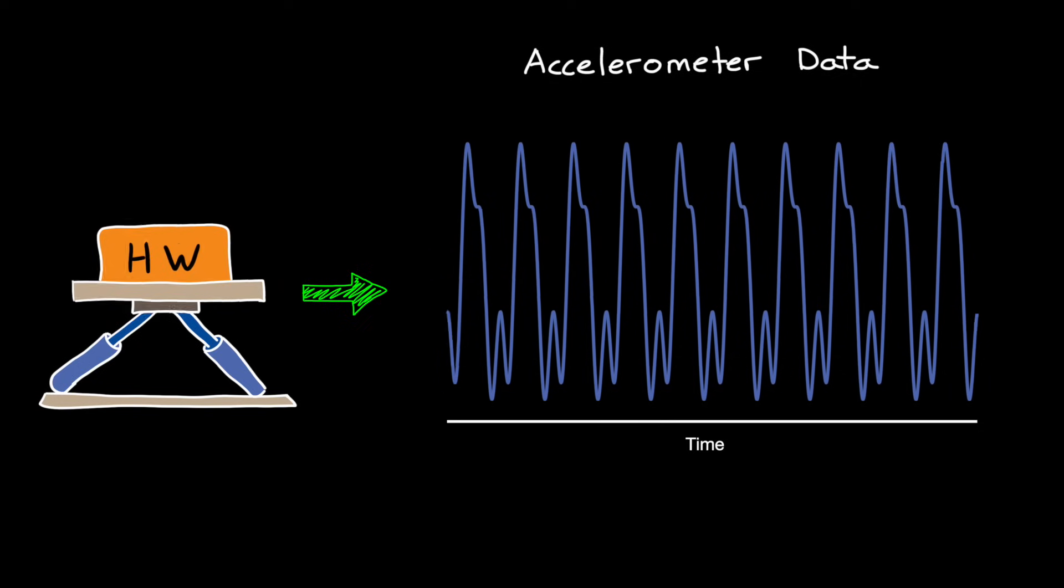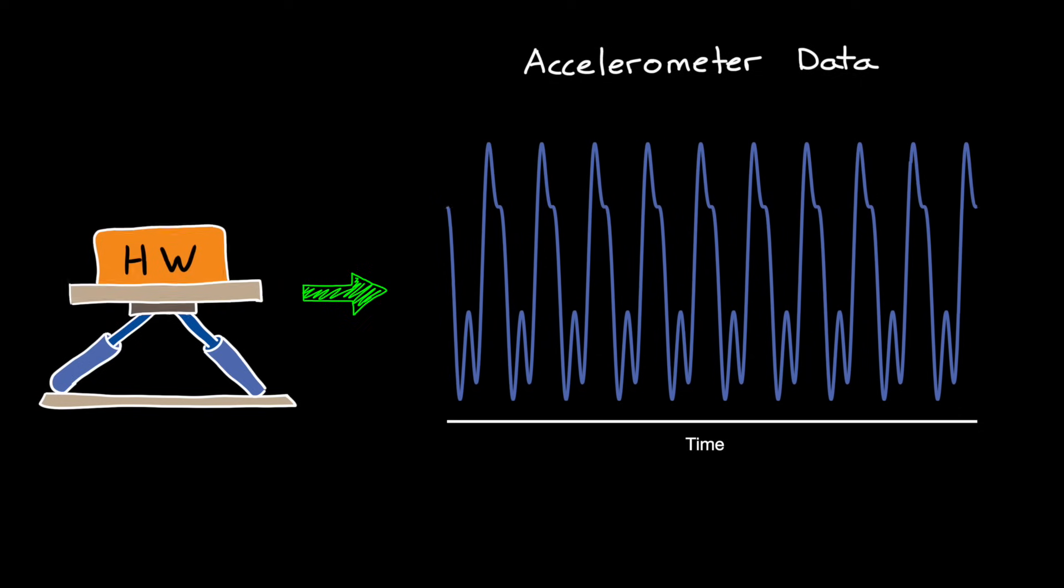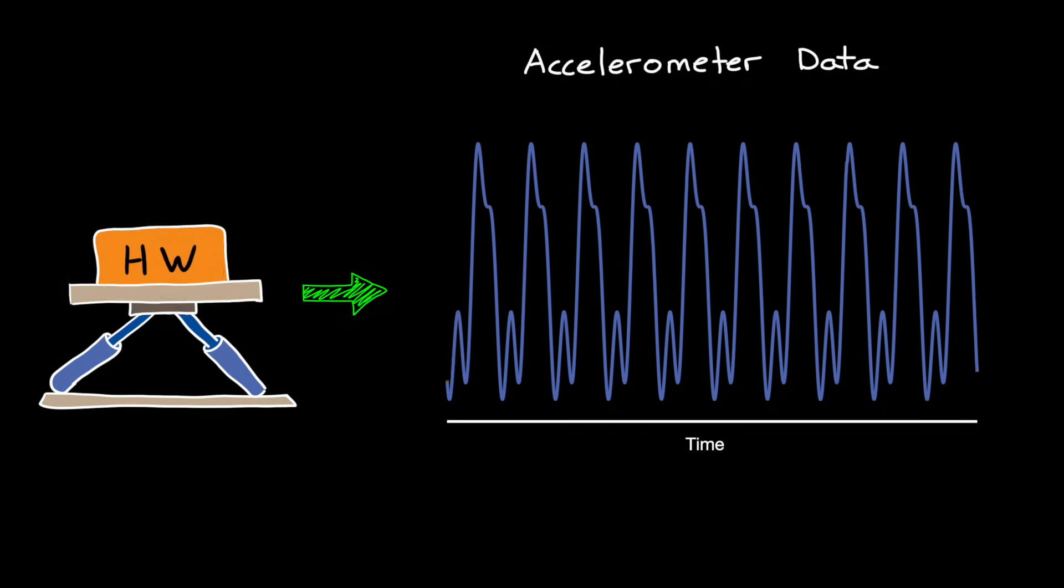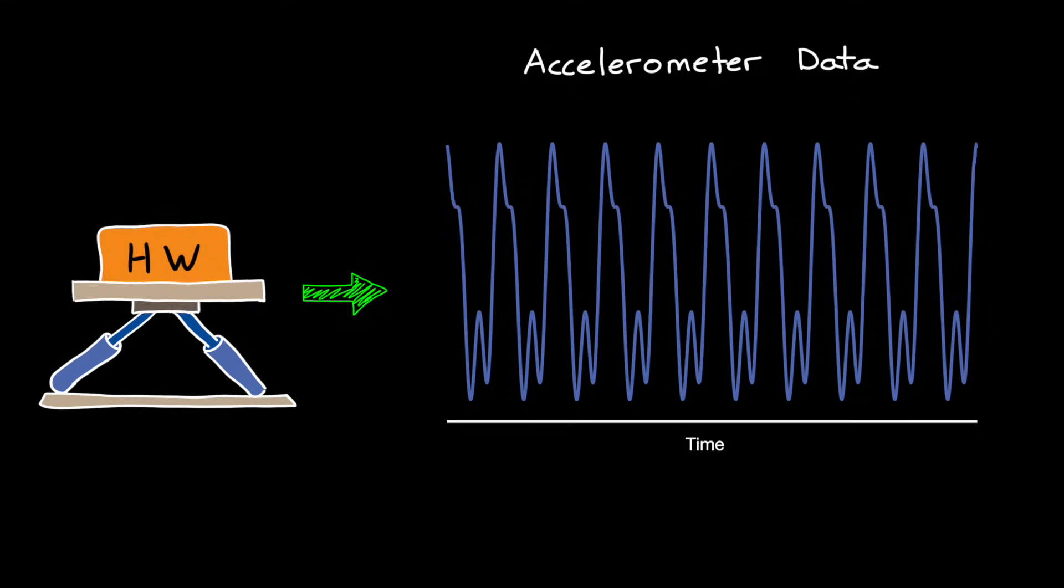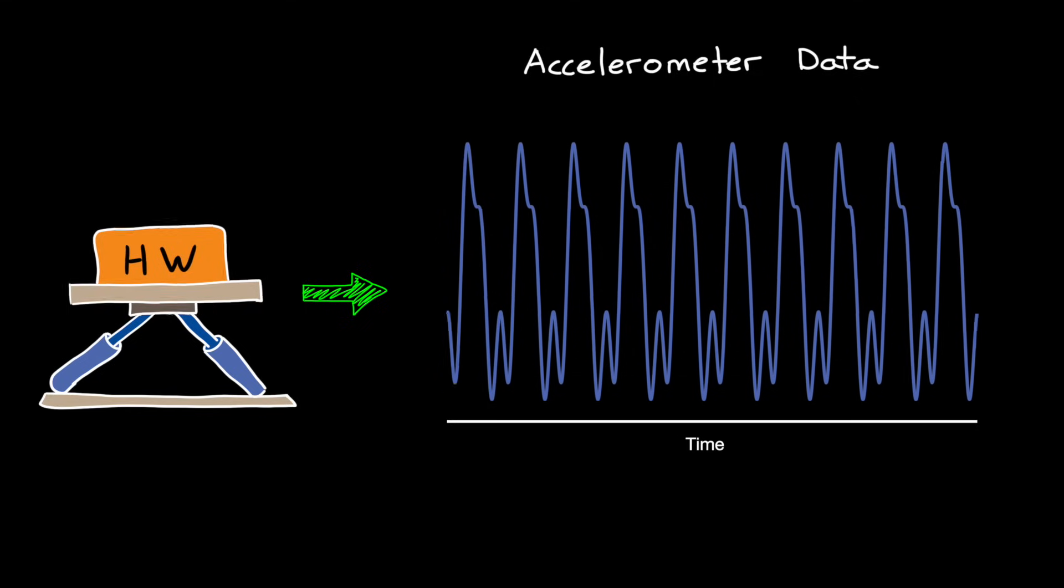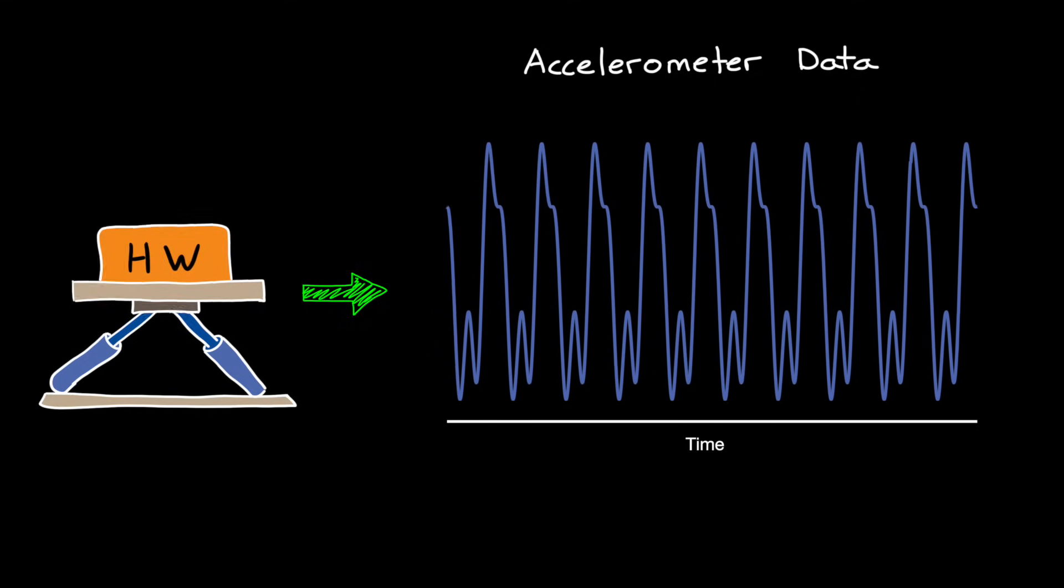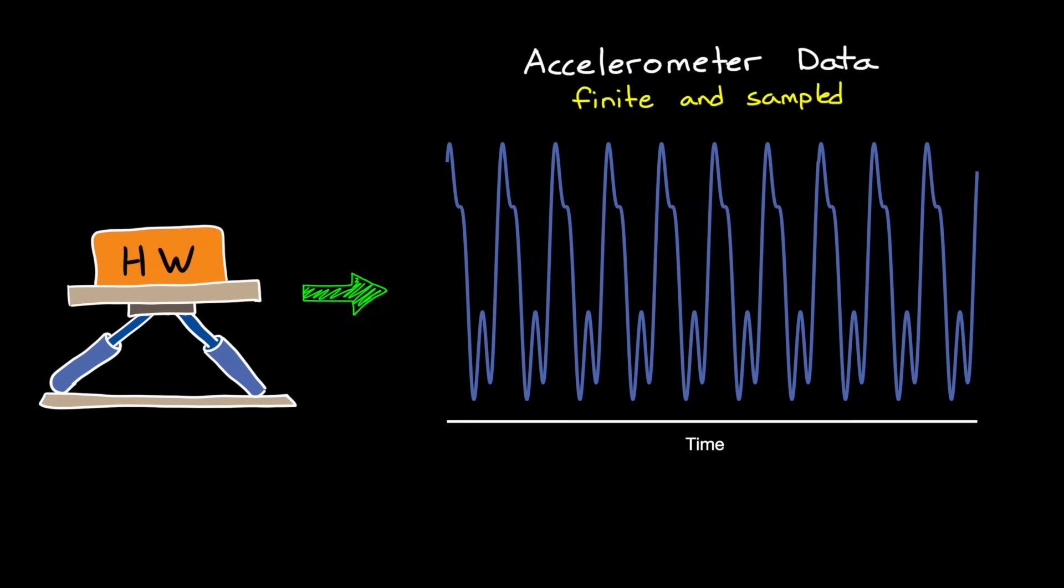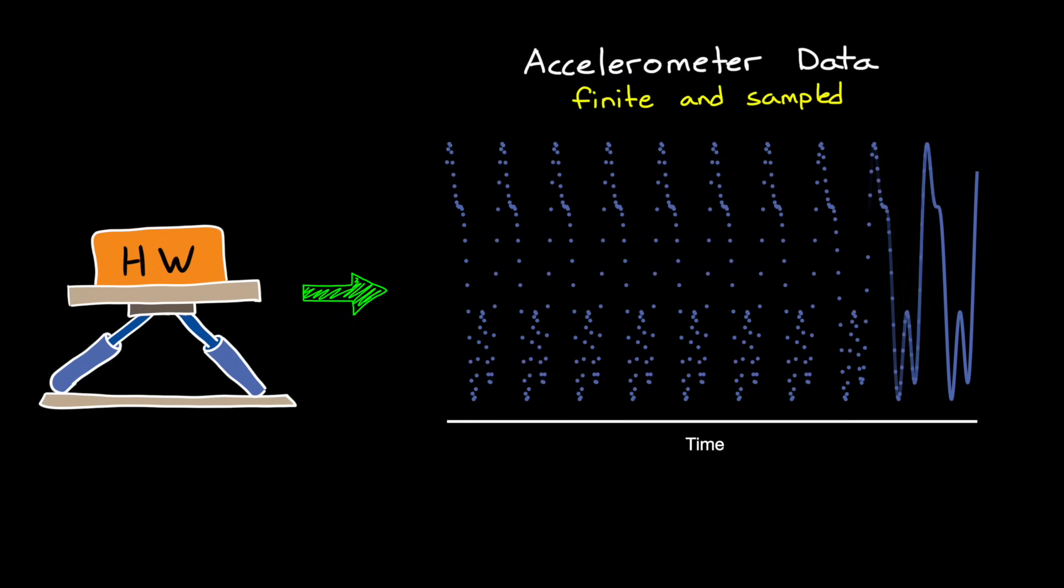Imagine you're running a vibration analysis on some piece of hardware that you're developing. The hardware is on a shaker table which applies random vibrations, and you measure how the hardware responds with accelerometers. This measurement is captured with a digital computer, and therefore what you get out is a finite amount of data that is sampled at a regular interval.